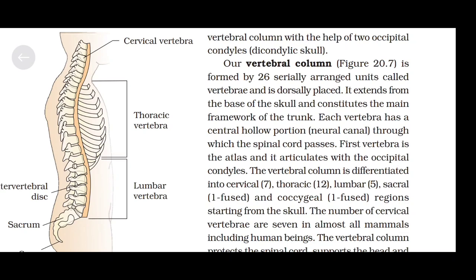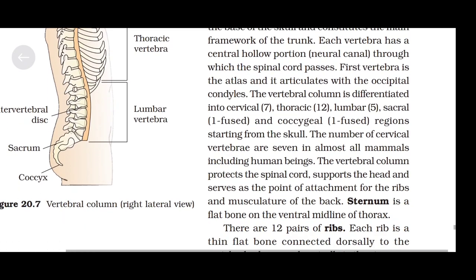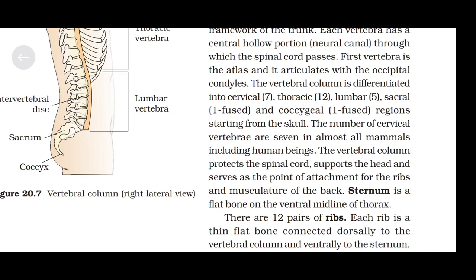Our vertebral column is formed by 26 serially arranged units called vertebrae and is dorsally placed. It extends from the base of the skull and constitutes the main framework of the trunk. Each vertebra has a central hollow portion called the neural canal through which the spinal cord passes. The first vertebra is the atlas and it articulates with the occipital condyles. The vertebral column is differentiated into cervical (7), thoracic (12), lumbar (5), sacral (1, fused), and coccygeal (1, fused) regions. The number of cervical vertebrae is 7 in almost all mammals. The vertebral column protects the spinal cord, supports the head, and serves as the point of attachment for the ribs and musculature of the back.